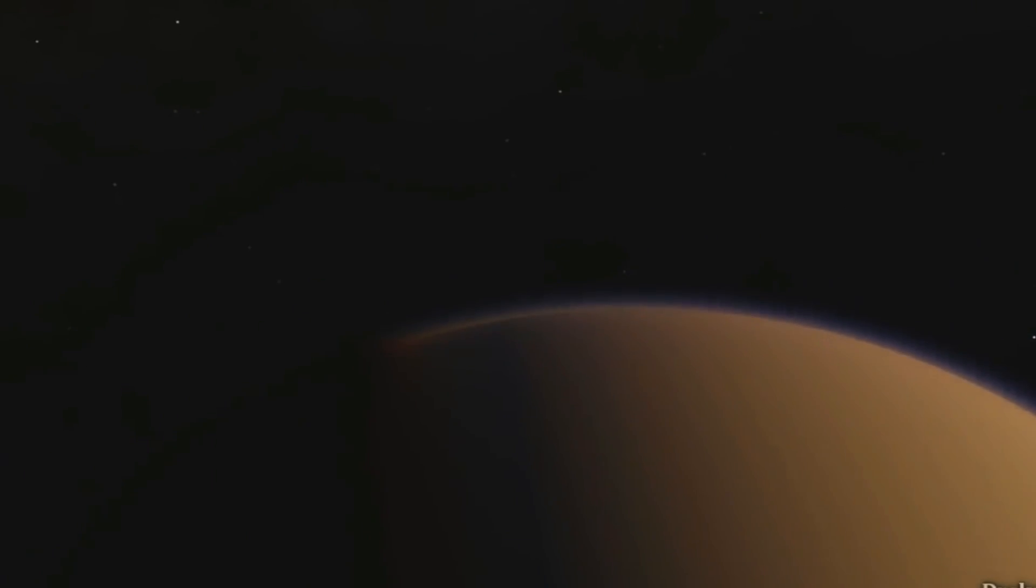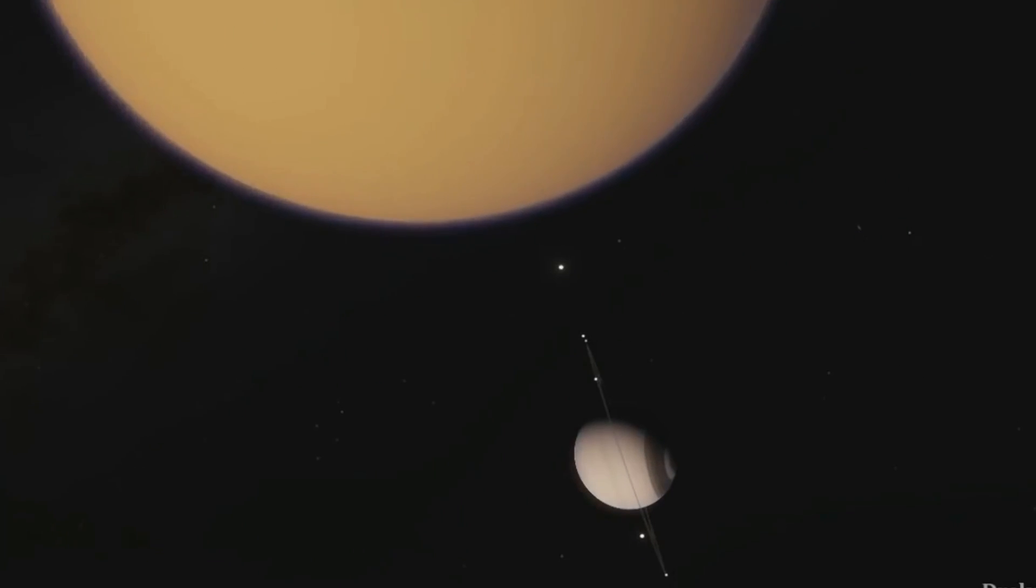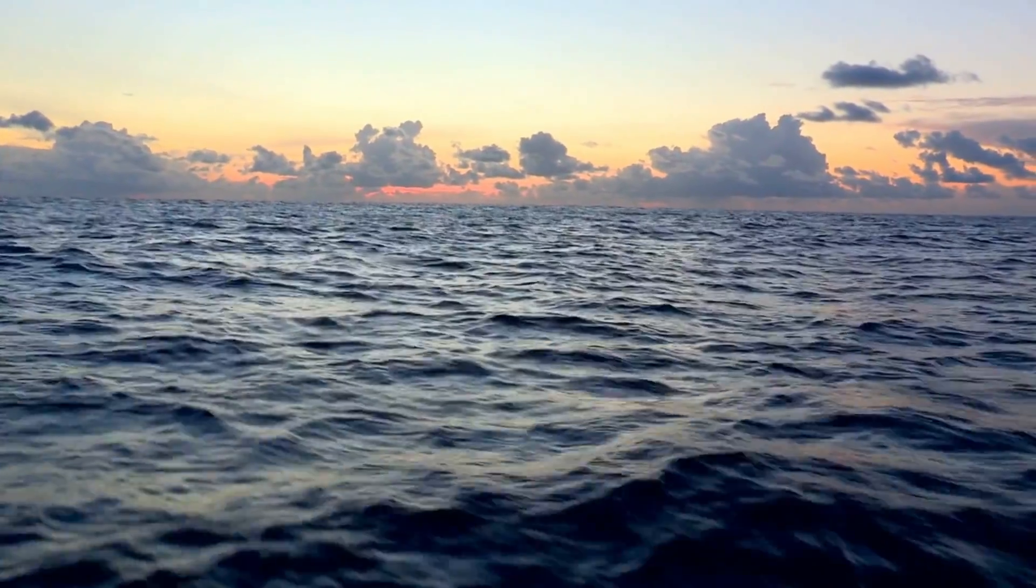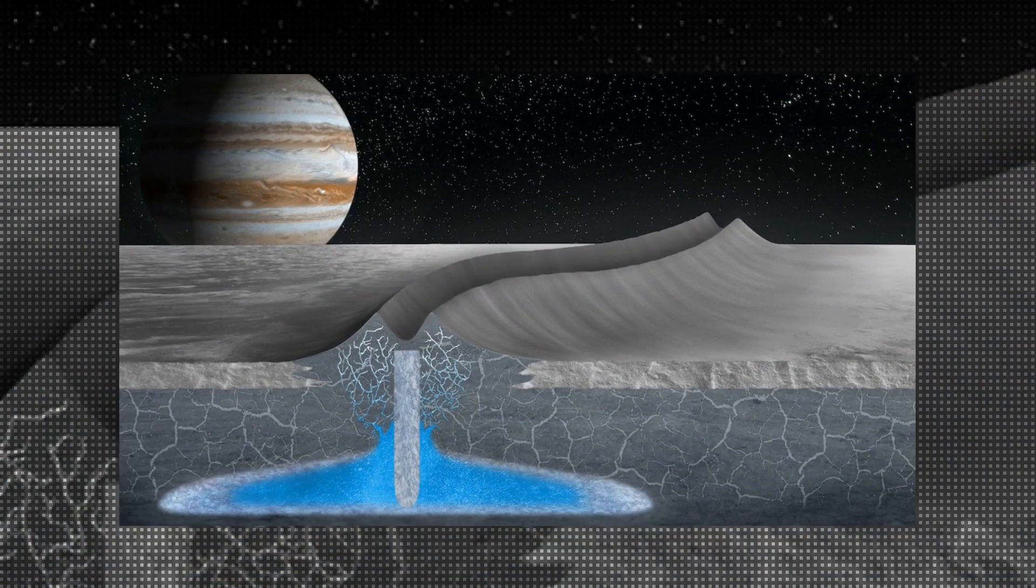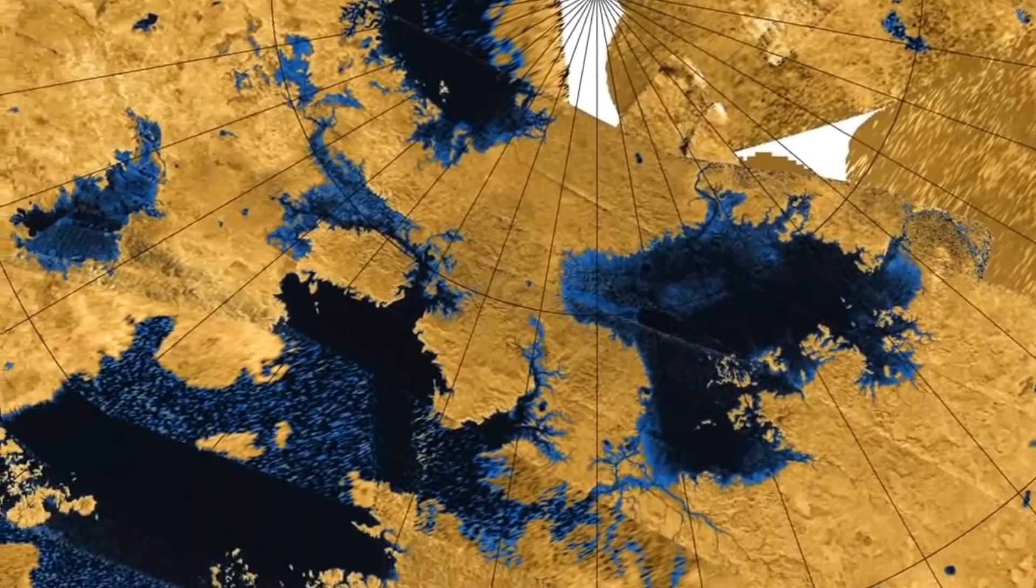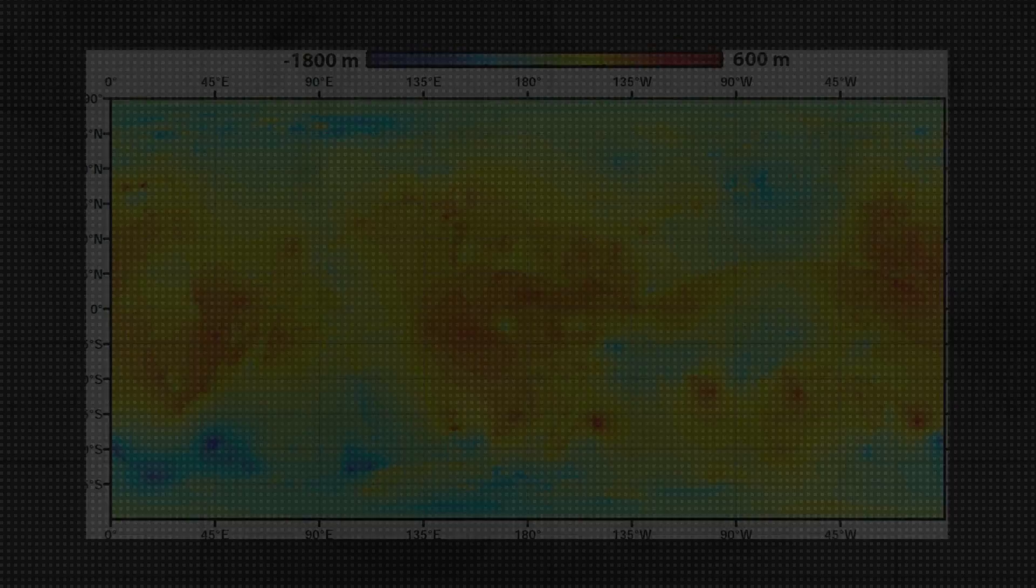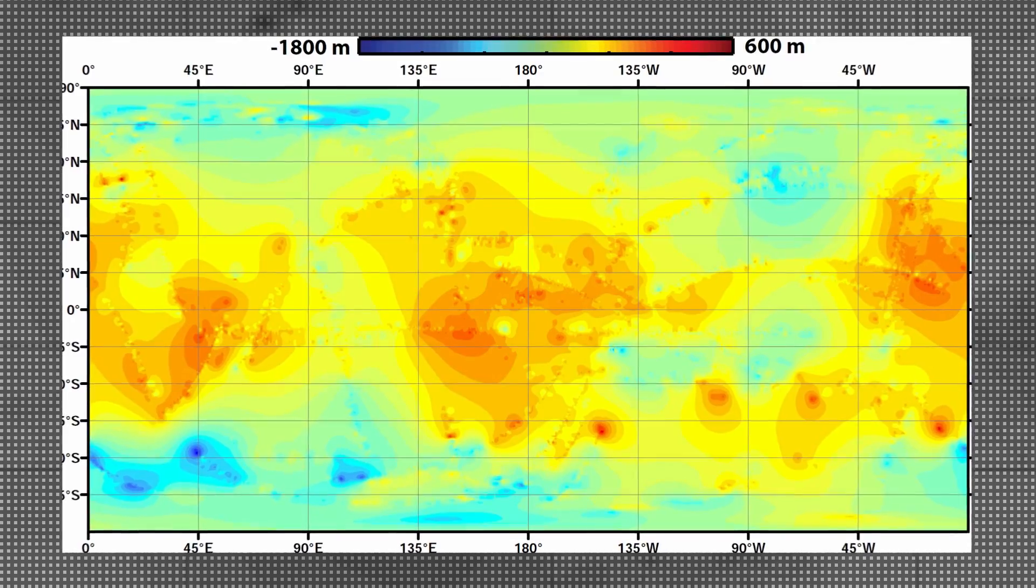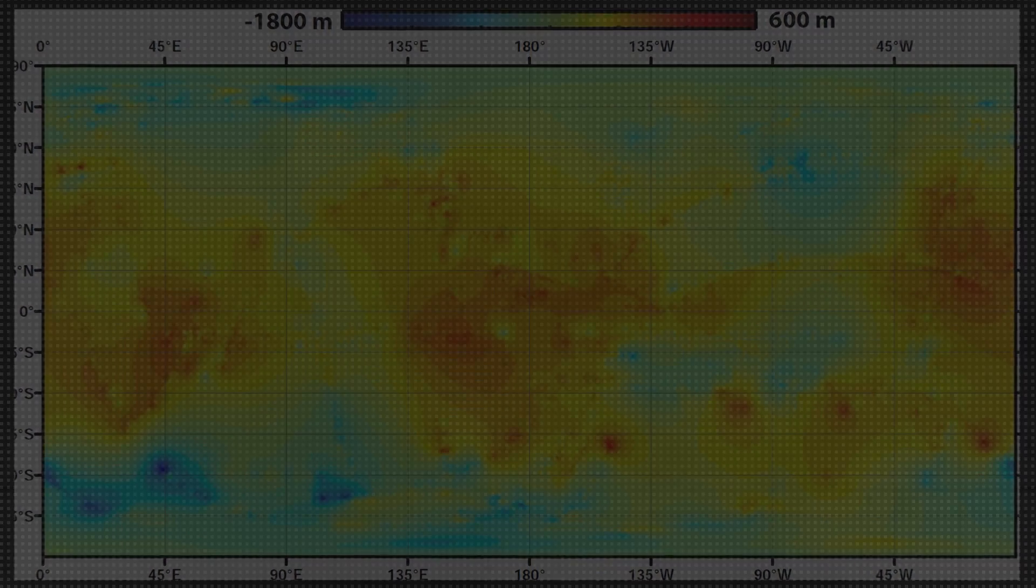The possibility of life on Titan is one of its most interesting topics. While the surface is inhospitable to life as we know it, there is a chance that life exists in the subsurface ocean of liquid water believed to exist beneath the ice crust. The conditions in this ocean are similar to those found in Earth's early oceans, where life was thought to have originated. We will explore this question further later, but first, let's take a closer look at Titan's surface topography to better understand it.